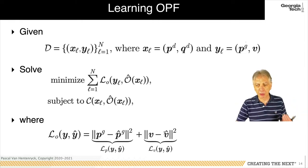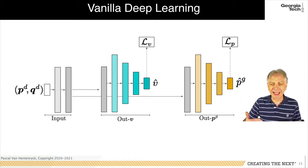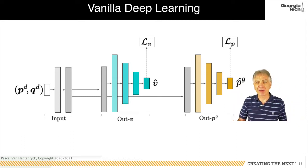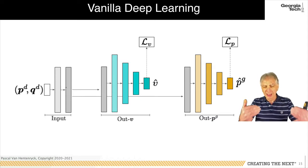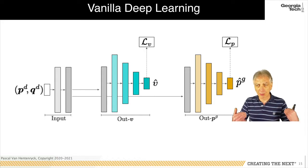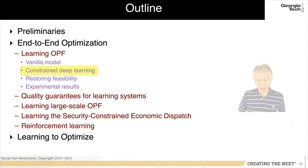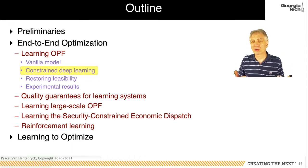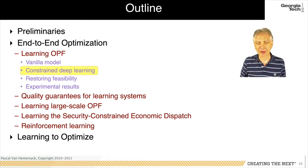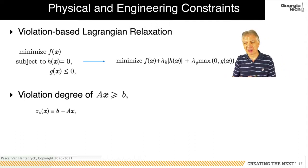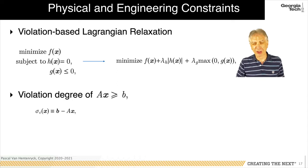A vanilla deep learning network is built to approximate the OPF mapping: starting from the real and reactive load, using encoding layers, then two sub-networks to independently predict the voltage magnitudes and real power of the generators. However, the vanilla network ignores the physical constraints of the power system. The next step shows how to capture these physical constraints during the learning process using concepts from optimization theory.